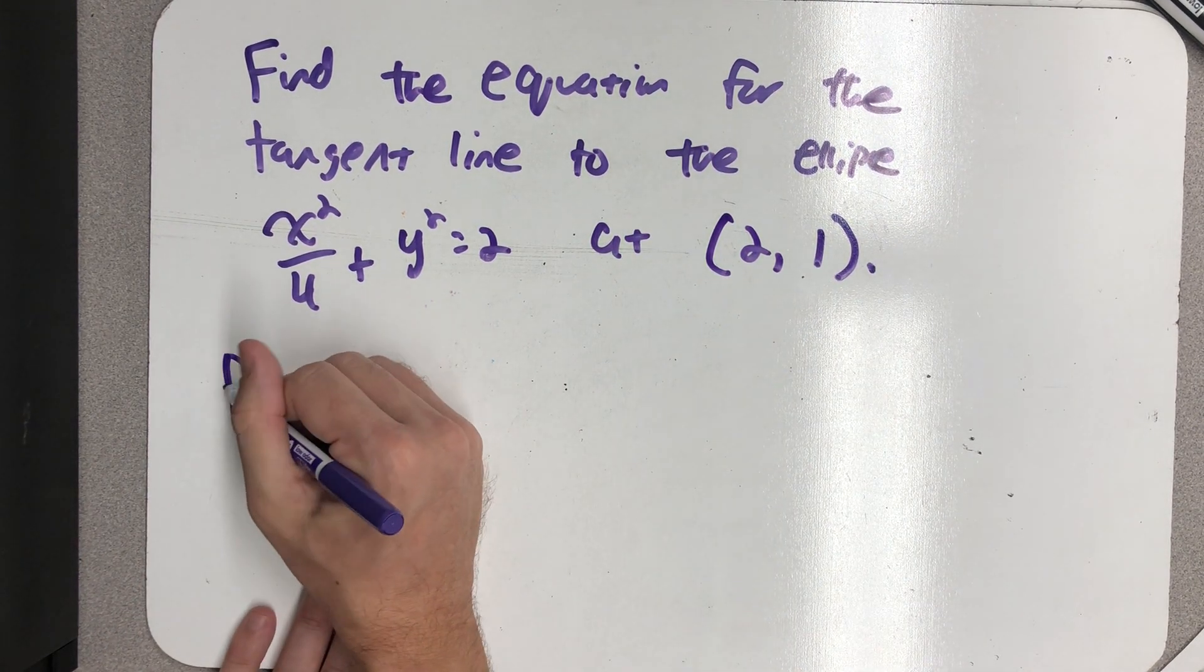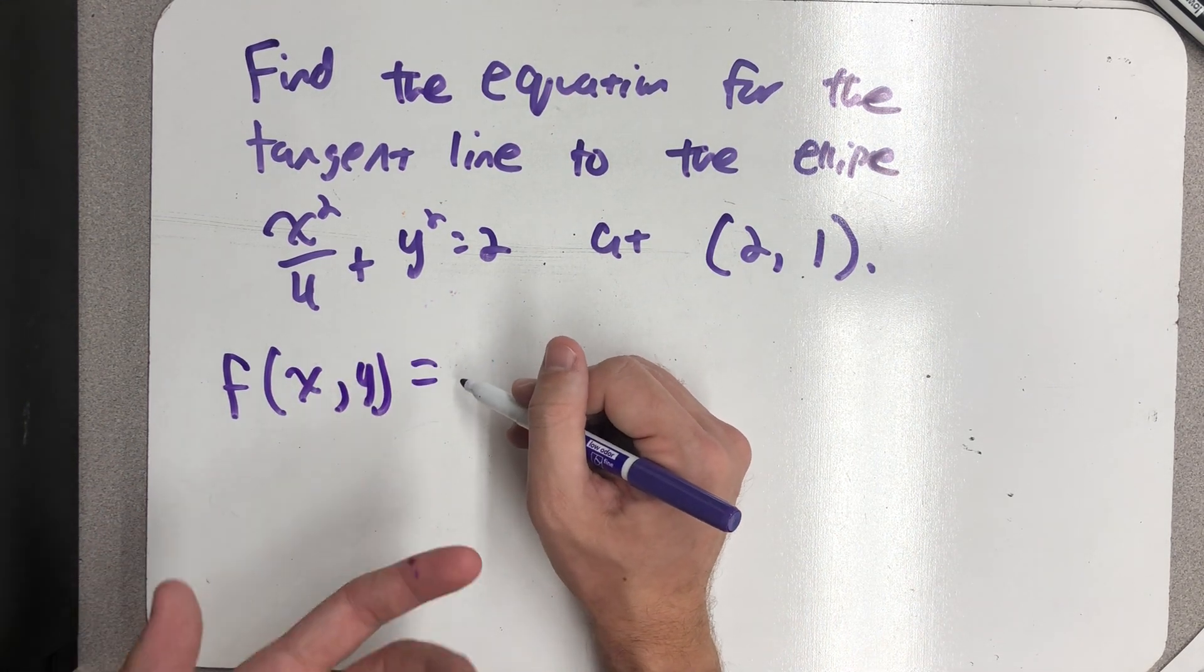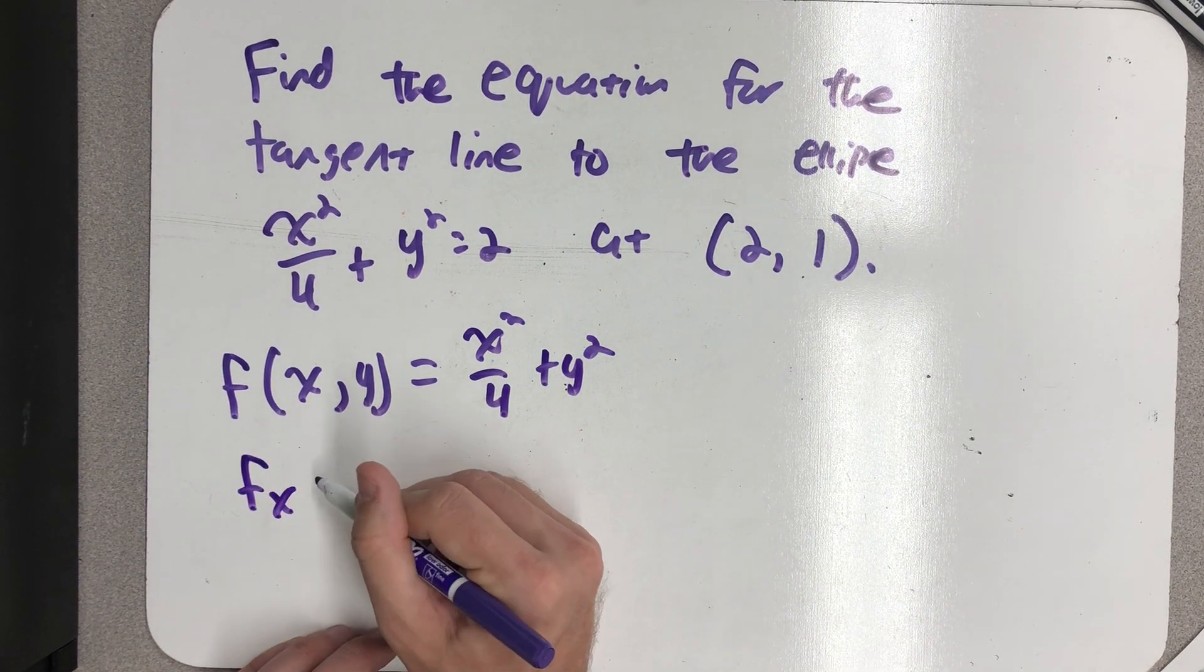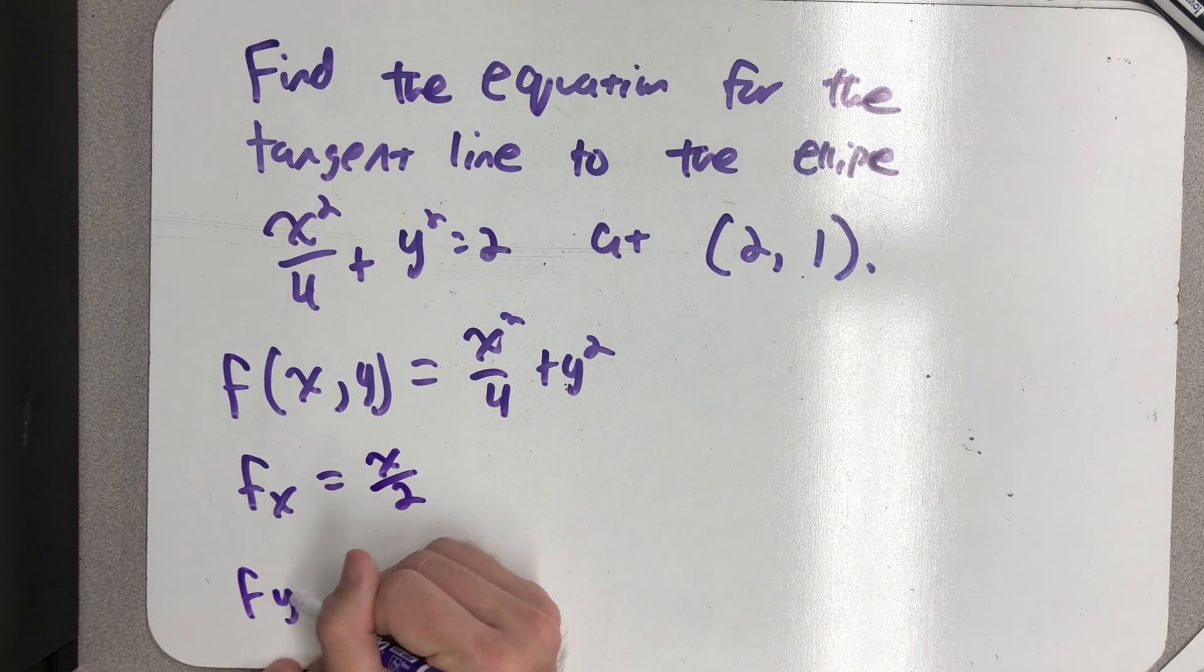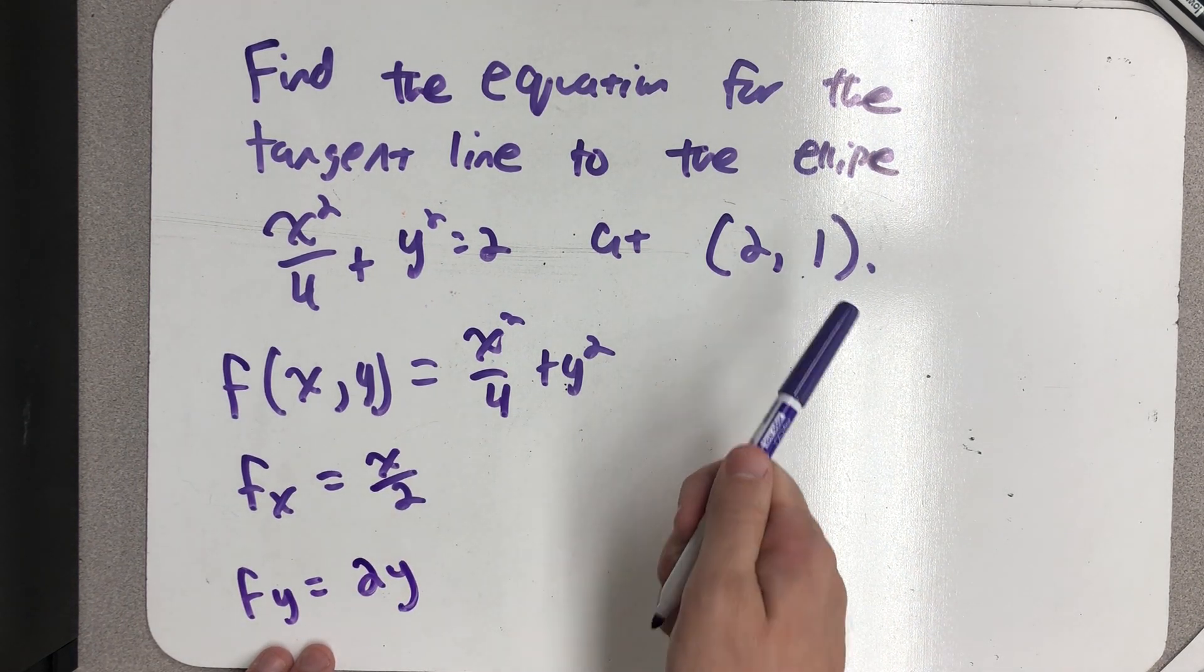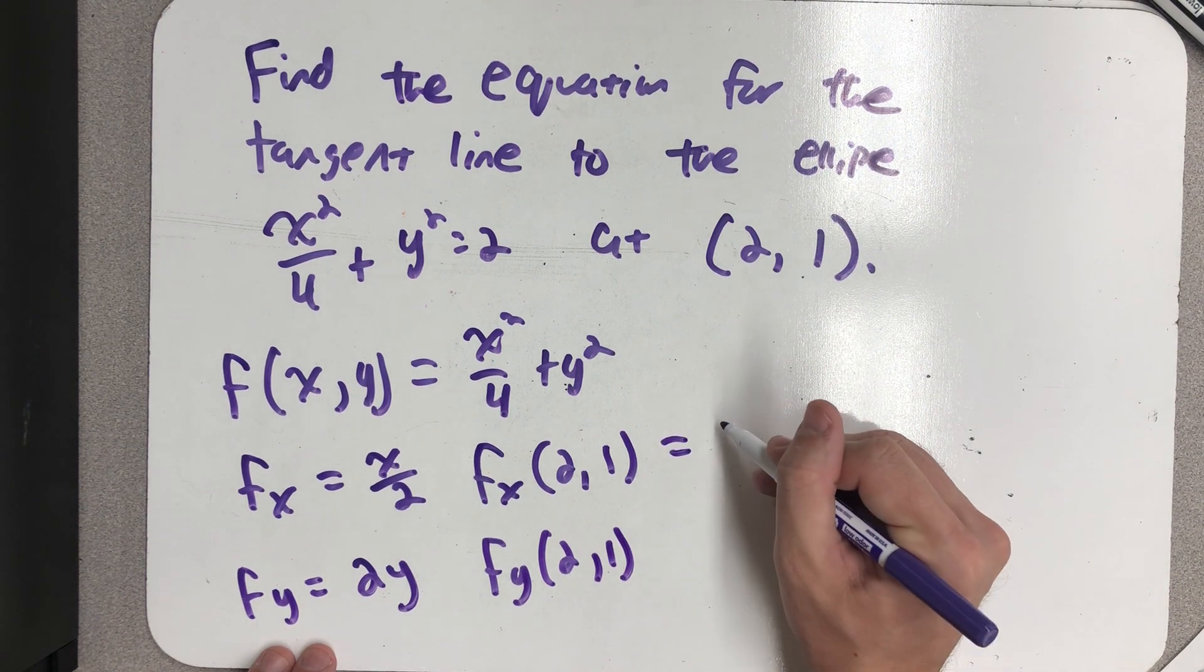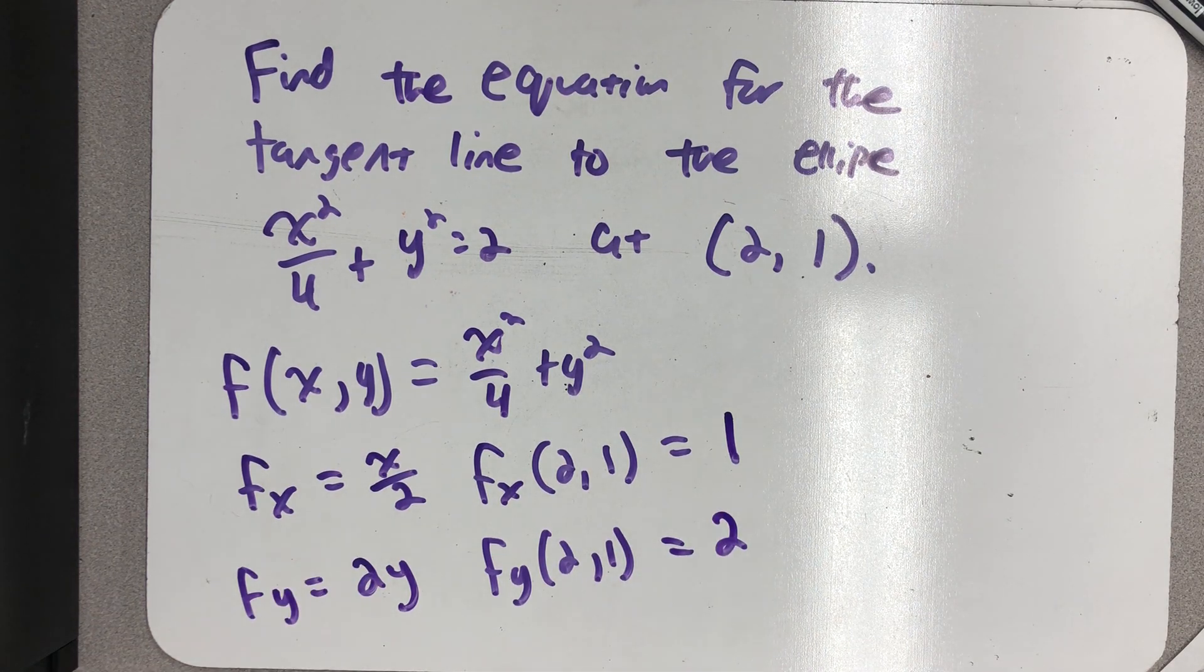So, I'm going to think about the left-hand side as being my level curve. I can find the partial derivatives. I can evaluate my partial derivatives at this point, pretty boring to do. And I end up with these coefficients.